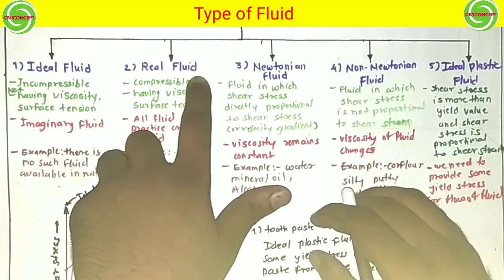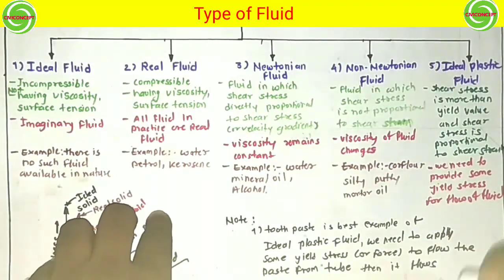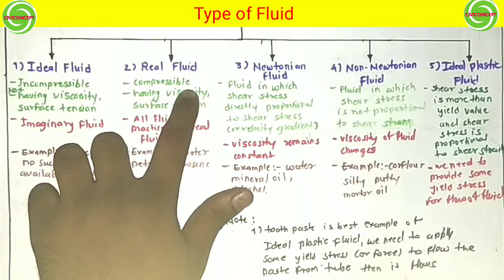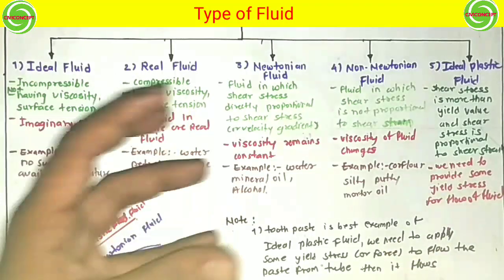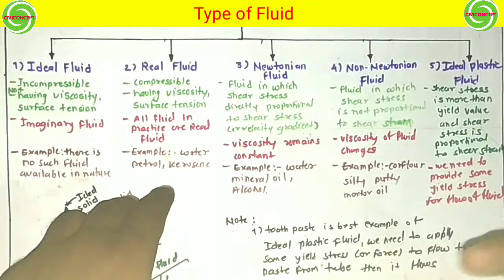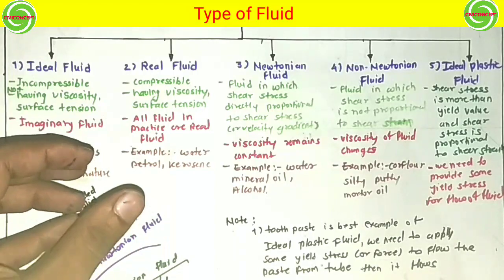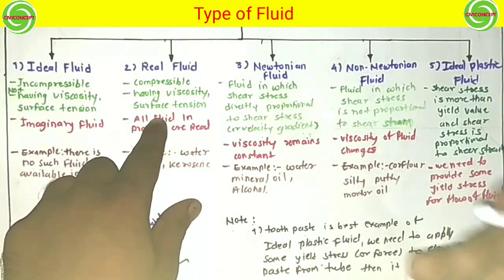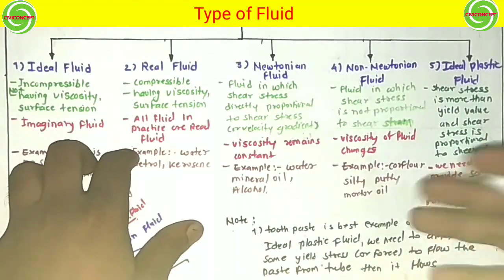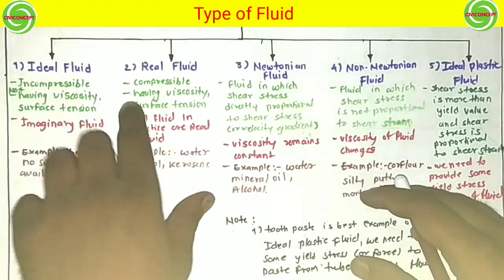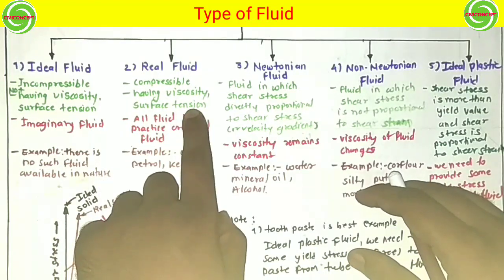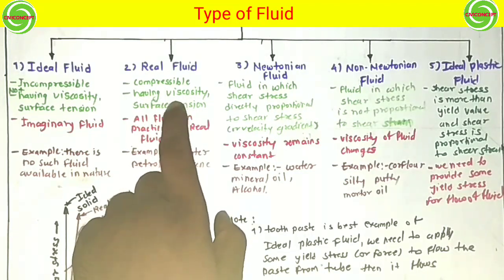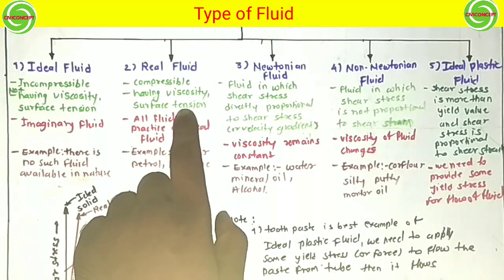Now we come to the real fluid. Real fluid is available in nature. Real fluid has compressibility — it can be compressible. You can take the example of water; it can be compressed a little bit. Fluid comprises gases and liquids — gas is compressible. Real fluid also has some viscosity and surface tension in it.